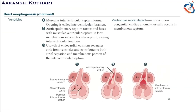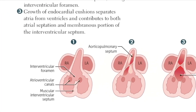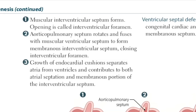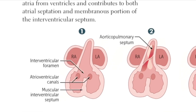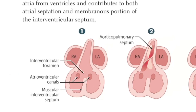Now let's go to ventricular septation. In the first step, the muscular interventricular septum is formed and there is an opening called as the interventricular foramen. This is the muscular interventricular septum, and hence there is formation of the interventricular foramen. These two structures are called as the atrioventricular canals — also called AV canals — which help in formation of the bicuspid and tricuspid valves, and help in the flow of blood from the atrium to the ventricle.